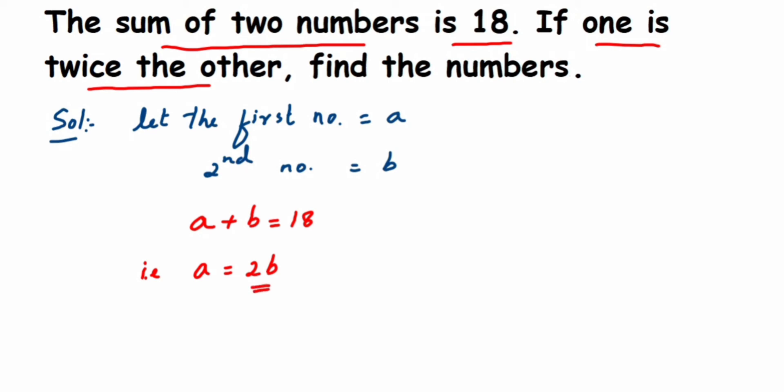Now we know a is equal to 2b and we also know that a plus b is equal to 18. We can simply write down in place of a, 2b and we're gonna get the answer here. So in place of a we're substituting 2b. So 2b plus b is equal to 18. So 2b plus b will be 3b, so 3b is equal to 18.